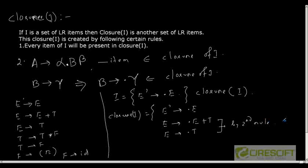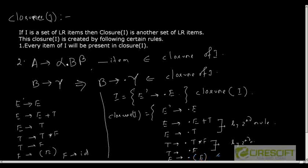Now again, I have T as T into F and T as F, so T as dot T into F and T as dot F also belong to closure of i, by the second rule. Then since F is present, F as dot E will also be present in closure of i, and also F as dot id. So all this will constitute the closure of i.